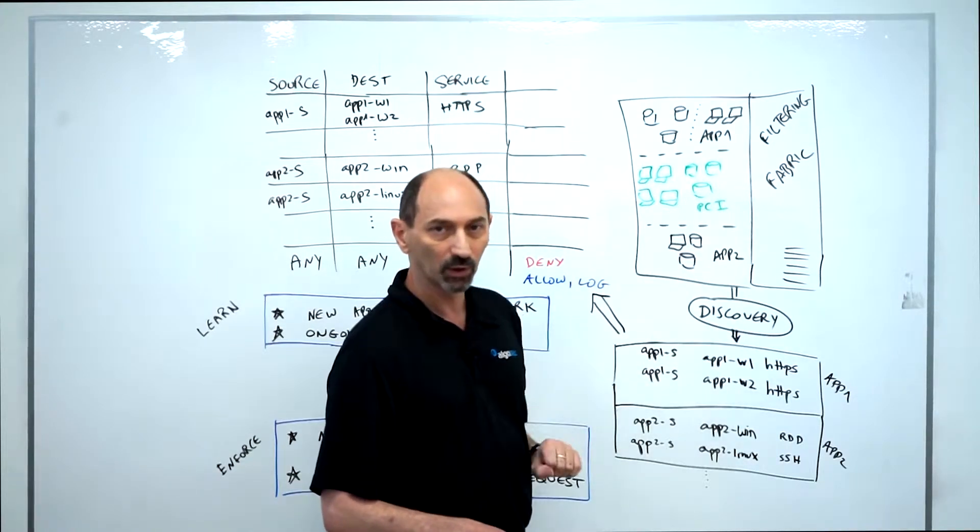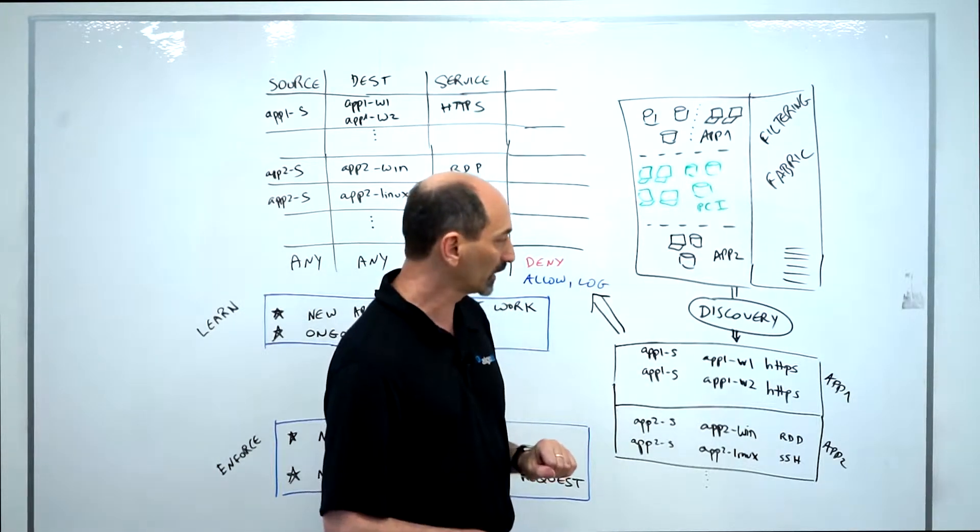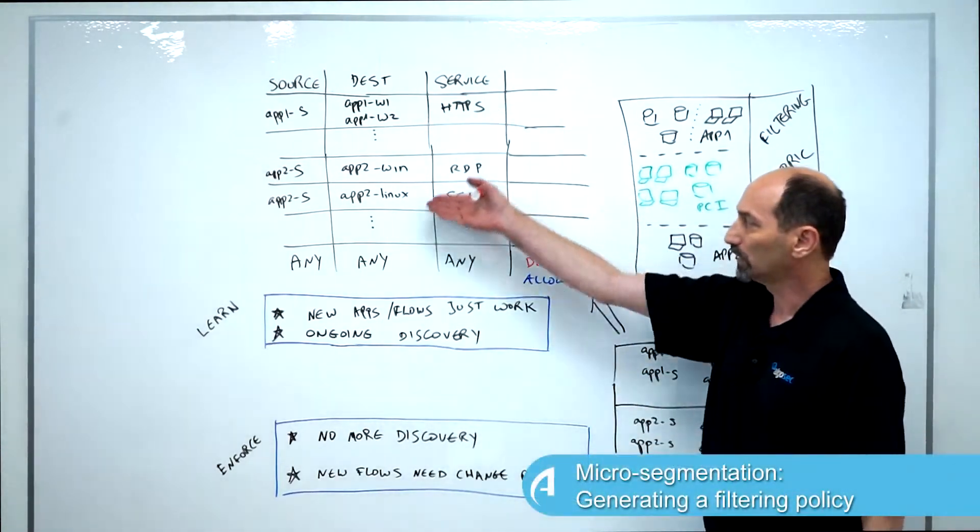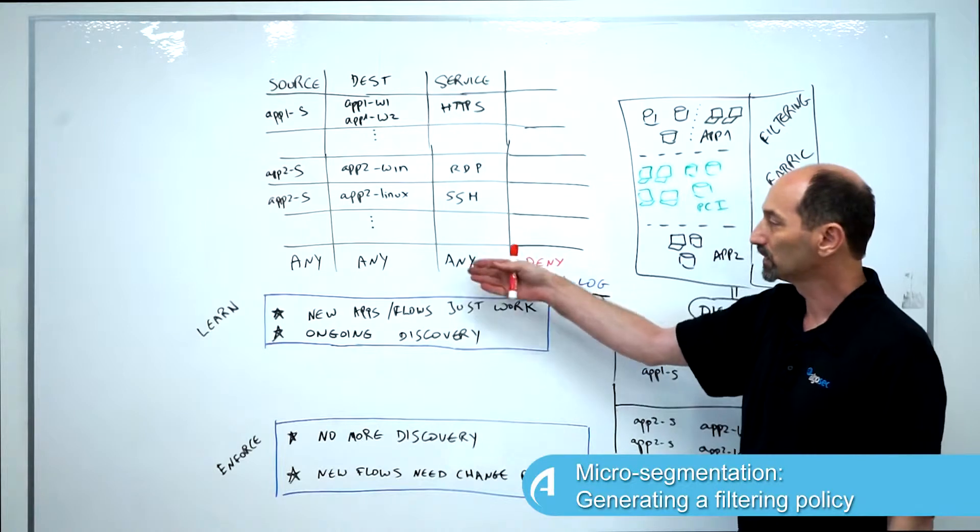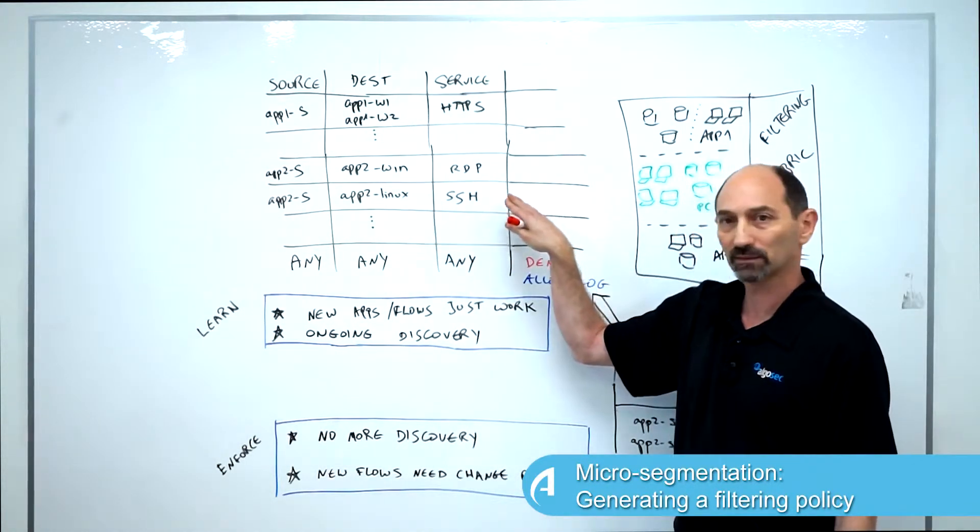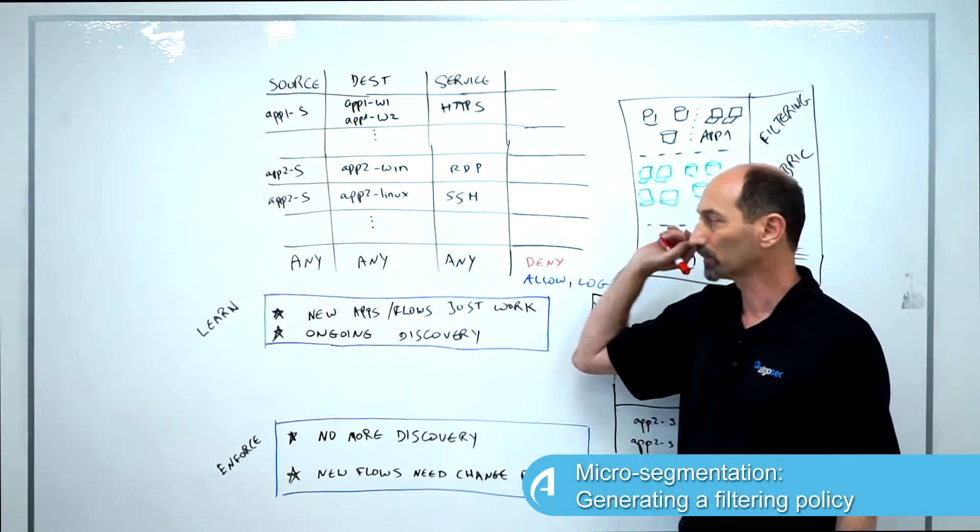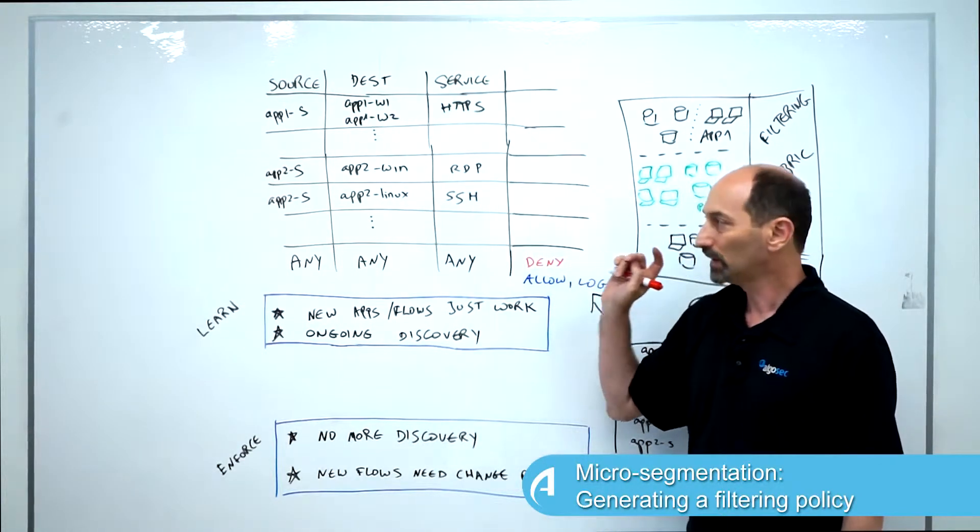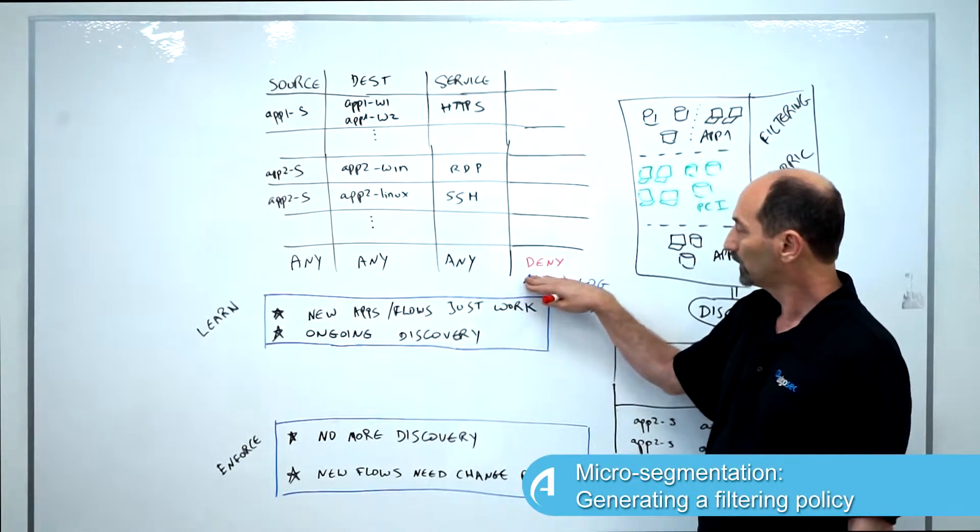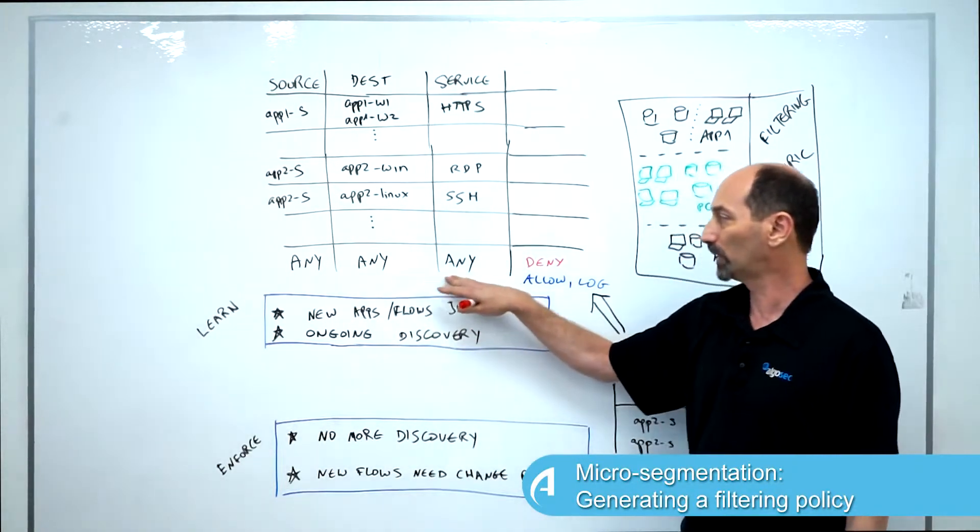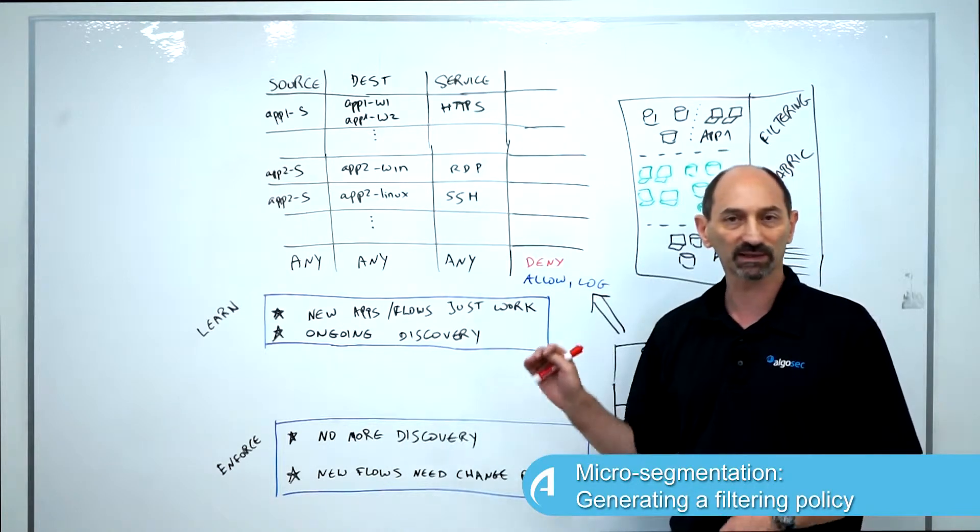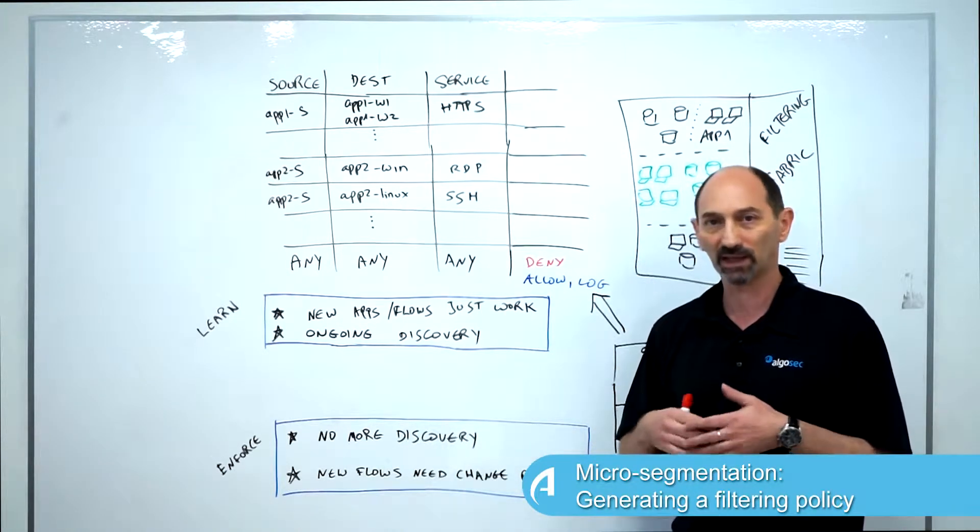So we have this project going on for a while. Our goal from this project is to produce a policy, a list of rules, where for every application we see the flows that support it as rules that allow specific traffic. And importantly, in order for the micro segmentation to mean anything, we want this policy to end with a deny rule that says, from anywhere to anywhere with any service that we haven't seen before, deny. This is the rule that protects us from malware, from lateral movement, etc.